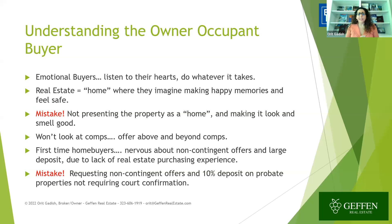Let's understand the owner-occupant buyer. We have two different types of buyers: owner-occupants and investors. The owner-occupant is emotional — they listen to their hearts and do whatever it takes to get the property. Real estate for them is a home where they imagine making happy memories and feeling safe. It's a mistake not to present the property as a home and make it look and smell good. They won't look at comps — they'll offer above and beyond comps because they want the house for their family. First-time home buyers are nervous about non-contingent offers and large deposits.